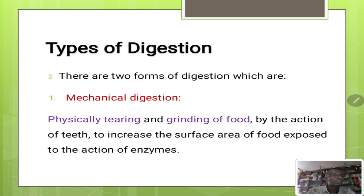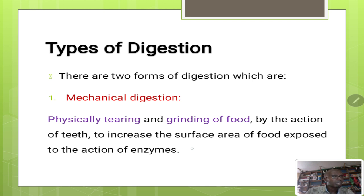There are two main types of digestion in the alimentary canal. The first one is mechanical digestion — this is the physical tearing and grinding of food, usually done by the teeth. Chewing the food by the action of teeth increases the surface area of the food exposed to the action of enzymes.